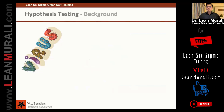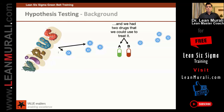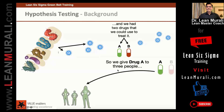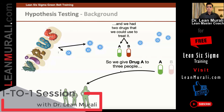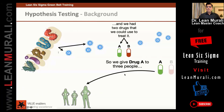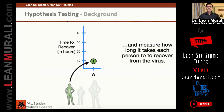Let us assume that a new virus has broke out — you can call the virus by any name. There are two drugs, A and B, that we can use to treat it. So before they test this drug, what they do is give drug A to some people — say, three people — and after giving the drug, measure how long it takes for each person to recover from the virus.